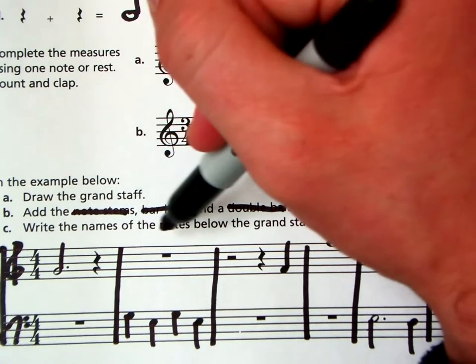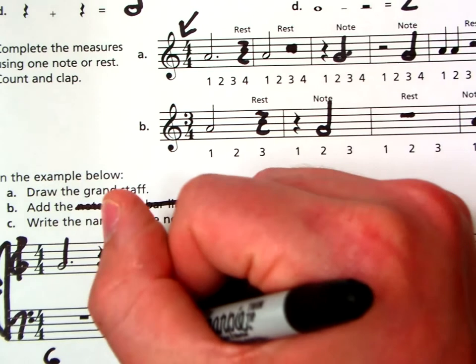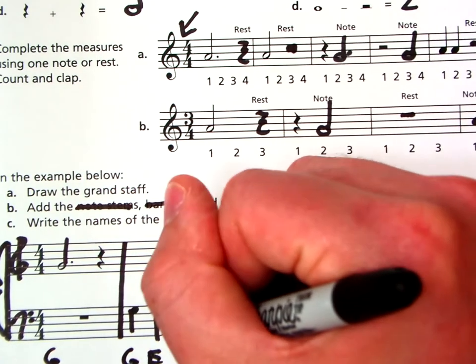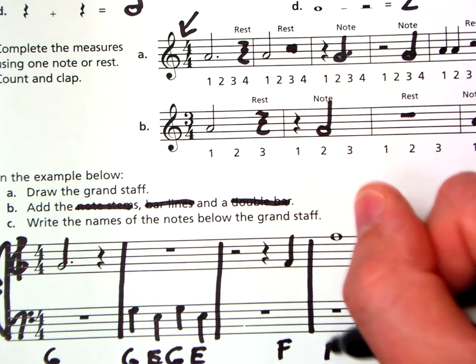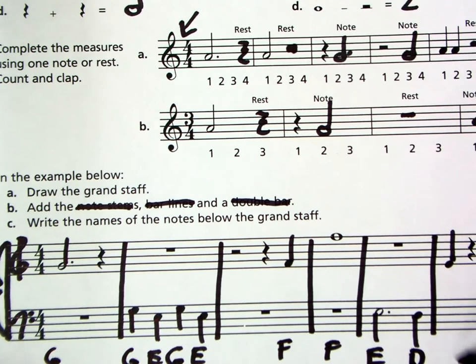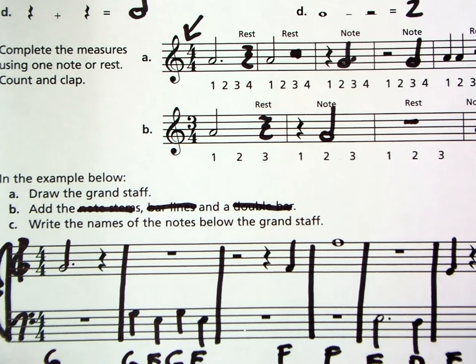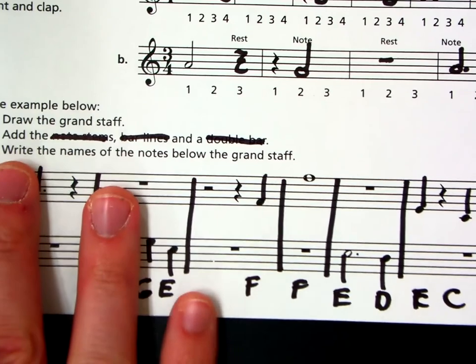Write the names of the notes below the grand staff. So this first one, there's a G. Then we have G, E, G, E. Then we have an F. And then another F. Then E, D, E, and C. Great. Sorry. You need to see the rest of that.